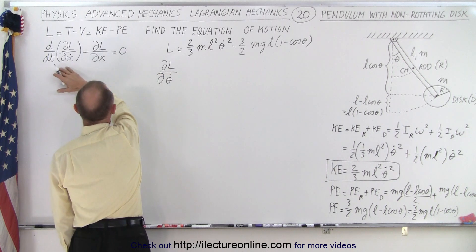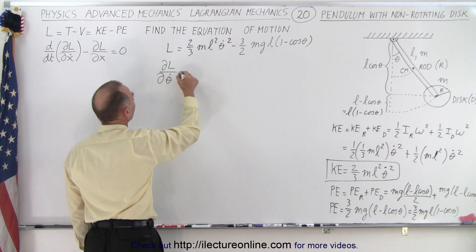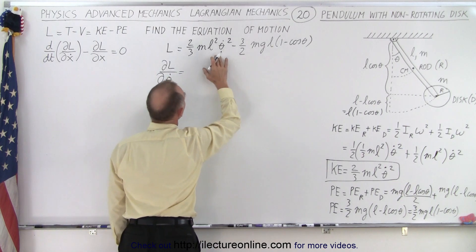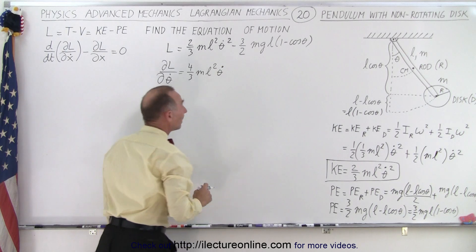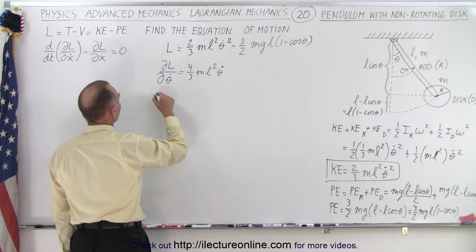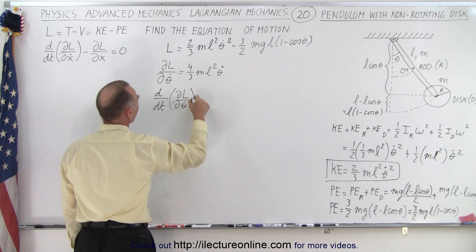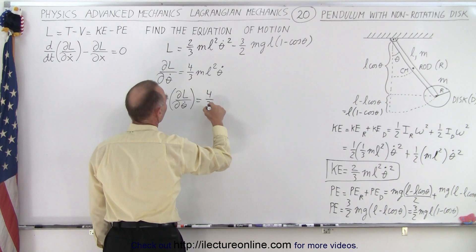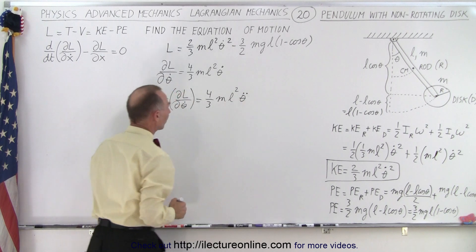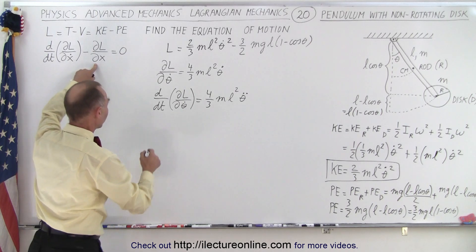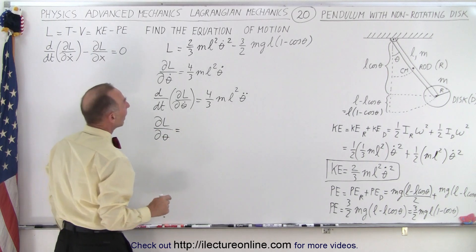First we find the partial of the Lagrangian with respect to theta-dot. The potential energy term goes to zero, and from the kinetic term we get two times two-thirds, which is four-thirds m L² θ̇. Taking the time derivative of that gives us (d/dt)(∂L/∂θ̇) = (4/3) m L² θ̈.